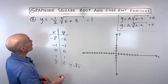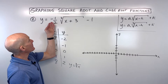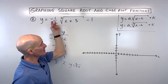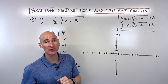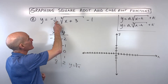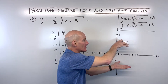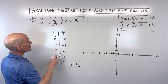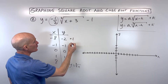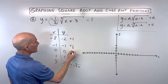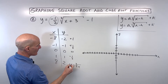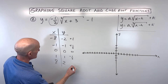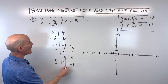Now let's look at our transformations. The negative is going to reflect the graph over the x-axis, making all the y-values their opposites. The one-half is going to be a vertical shrink by a factor of one-half. We can do this all in one step by multiplying the y-values by negative one-half, giving us 1, one-half, 0, negative one-half, and negative 1.